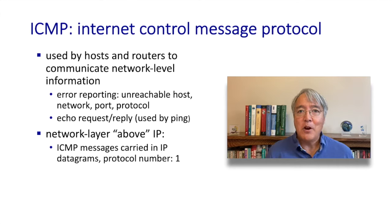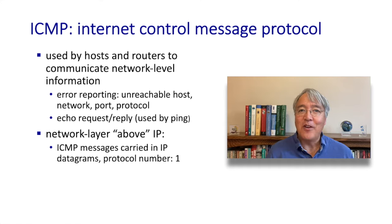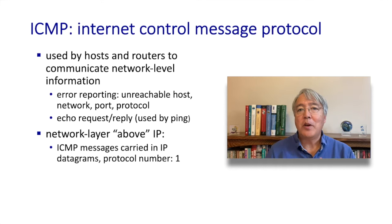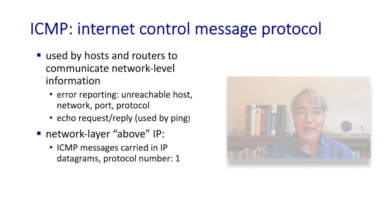As an upper-layer protocol, ICMP has a protocol number — its protocol number is one, the very first number. As you may remember, this protocol number is used for demultiplexing up from IP, whether to ICMP, UDP, or TCP.